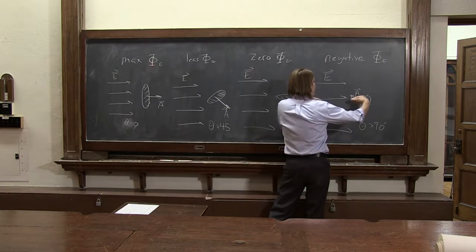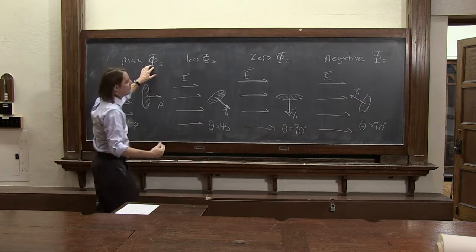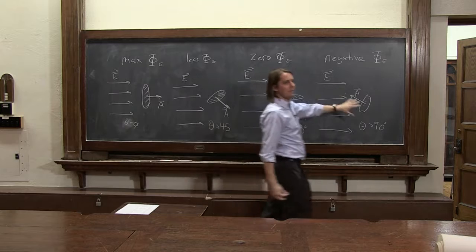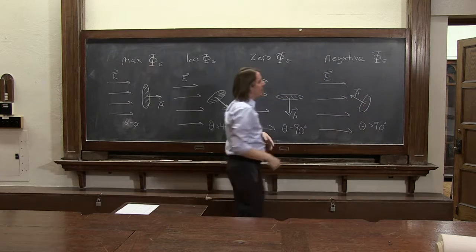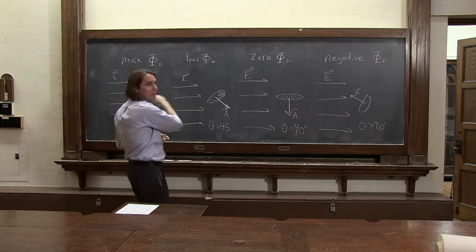It can be all the way to facing where it's 180 degrees and you get minus one. So you can get this maximum value all the way from positive all the way down to negative. And which way you draw the area vector, it's really just a convention. It's like you're going to call this way plus x or you're going to call that way plus x.